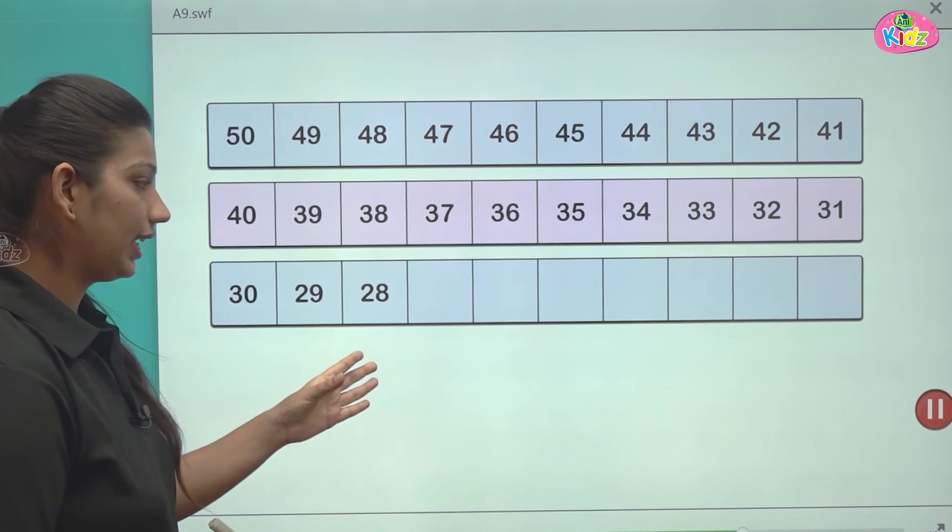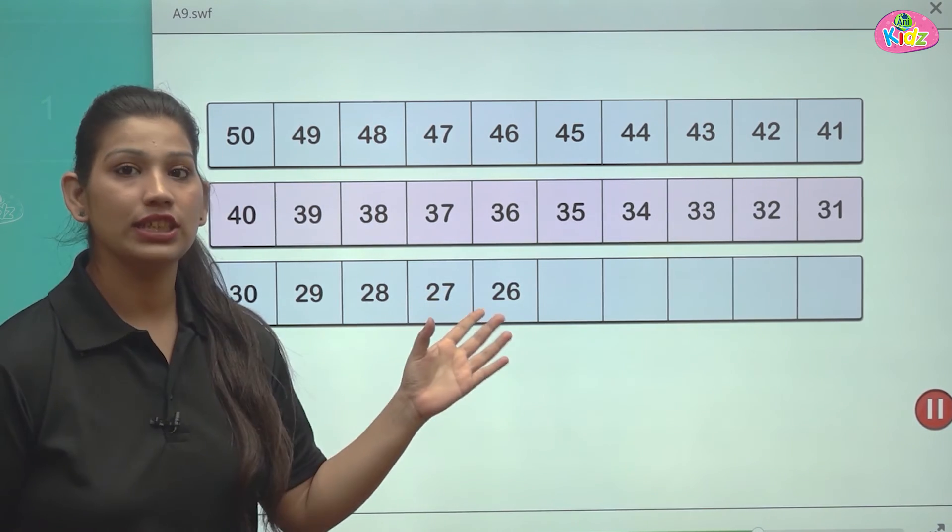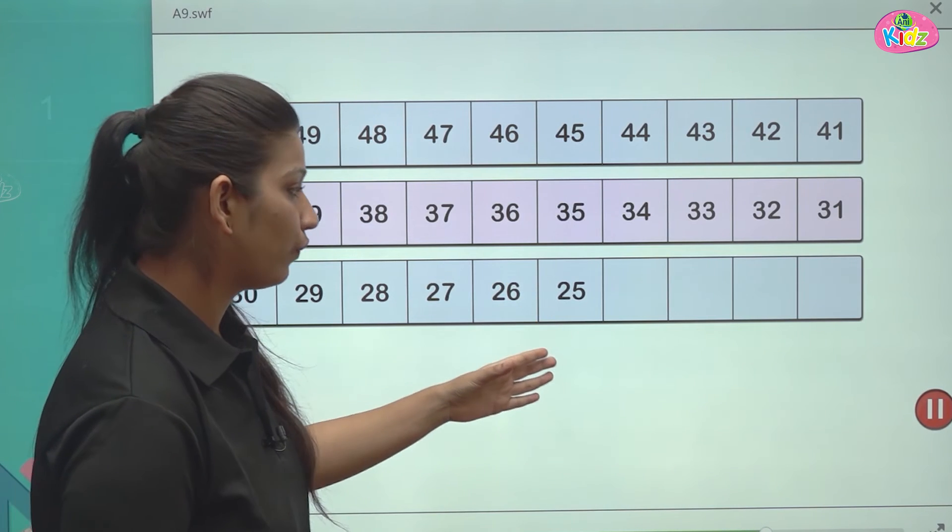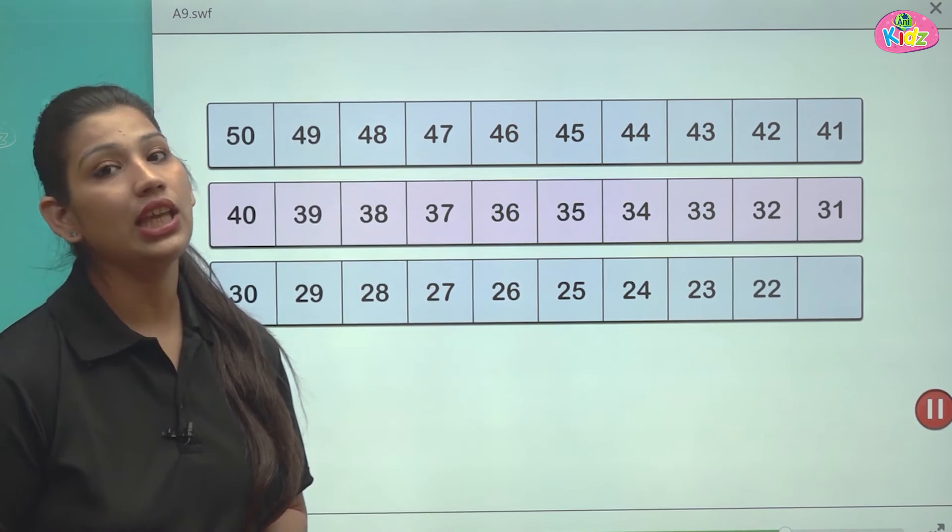Then comes 30, 29, 28, 27, 26, 25, 24, 23, 22 and number 21.